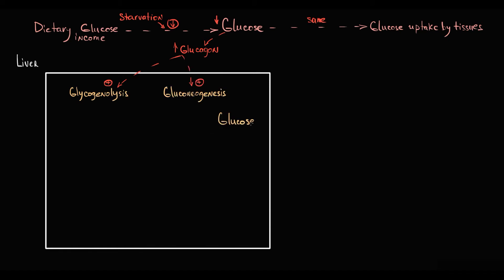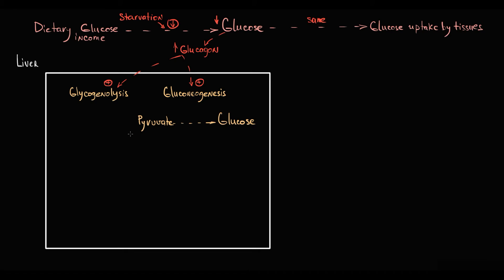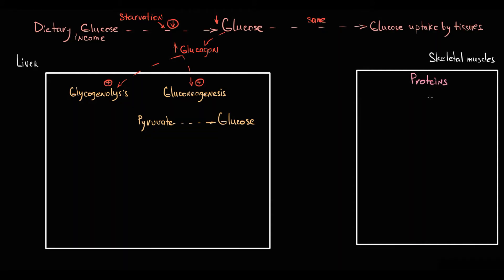In gluconeogenesis, glucose is produced from pyruvate. Initially, the liver uses its own pyruvate reserves, but the level of pyruvate in the liver tissue has to be maintained — if pyruvate is used for glucose production, something has to replenish it. One of the biggest pyruvate stores in our body is skeletal muscle. During starvation, to maintain glucose production, the organism uses protein reserves in muscle tissue.